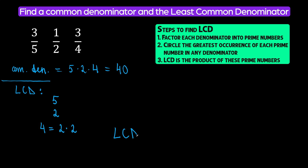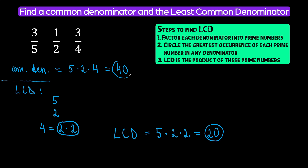To find the least common denominator, we are going to multiply our prime numbers — but here's how. Let's start with five: it shows up once as a prime number, so we bring it down to the LCD. Now let's look at two. Two shows up in the denominator two once, but the prime factor two shows up in four twice. The maximum number of times two shows up in any one denominator is two times, so bring it down — two times two. You do not write down three twos because you need the greatest occurrence of two in any one denominator. So our least common denominator is five times two times two, which is twenty. Our least common denominator is smaller than the common denominator.